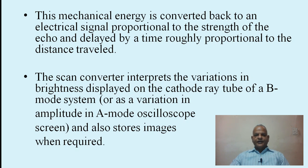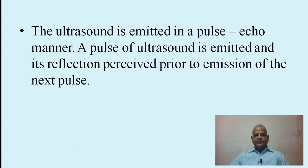The scan converter interprets the variations in brightness displayed on the cathode ray tube of a B-mode system, or as a variation in amplitude on an A-mode oscilloscope screen, and also stores images when required. The ultrasound is emitted in a pulse-echo manner — a pulse of ultrasound is emitted and its reflection perceived prior to emission of the next pulse.